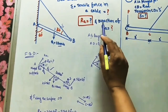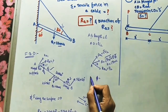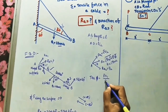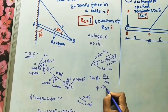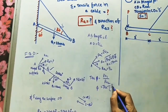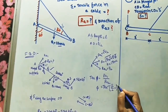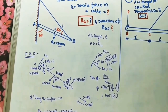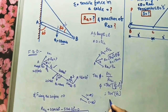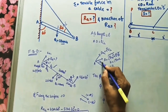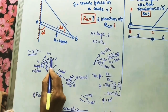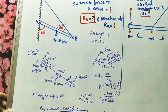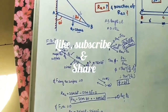To find the direction of RA, we compute tan φ = RA1 / RA2 = (√3/2) / (1/2) = √3. So φ = tan⁻¹(√3) = 60 degrees. The resultant RA makes 60 degrees with the bar. Final answers: tension S = √3 tons, reaction at hinge RA = 1 ton at 60 degrees.